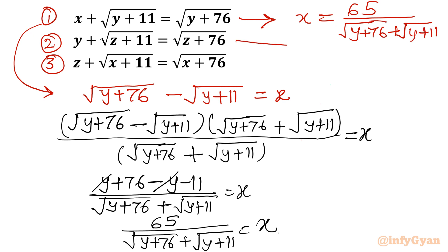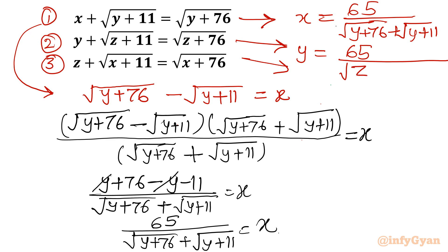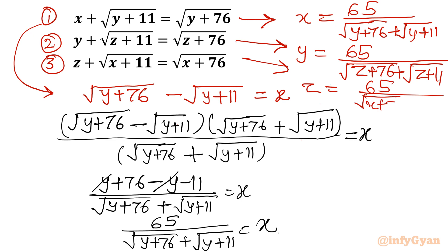Similarly, we will write the value of y from equation 2, and z from equation 3. For z, we can write 65 over square root of (x + 76) plus square root of (x + 11).